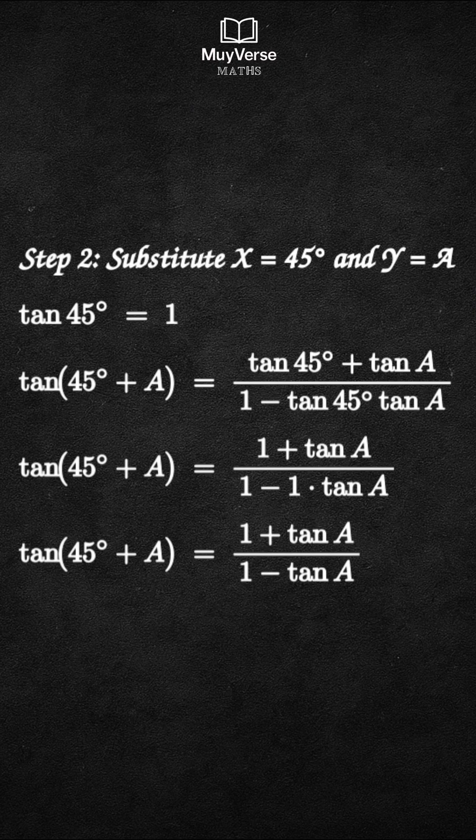Step 3. We have shown exactly that tangent of 45 degrees plus a equals the fraction 1 plus tangent a over 1 minus tangent a. This completes the proof, proven using only the tangent addition identity.